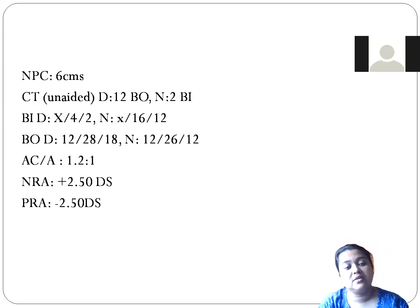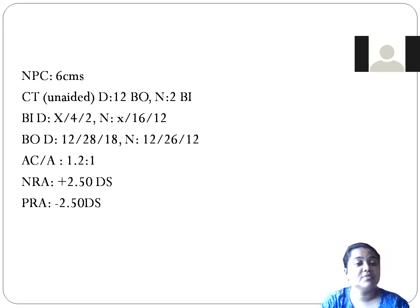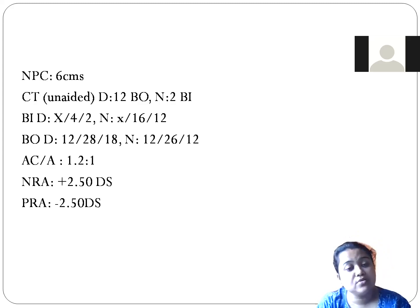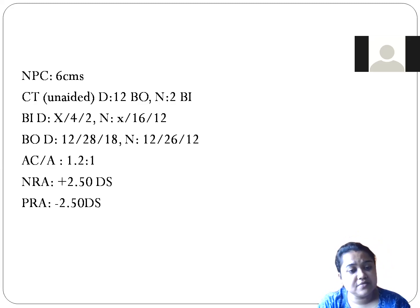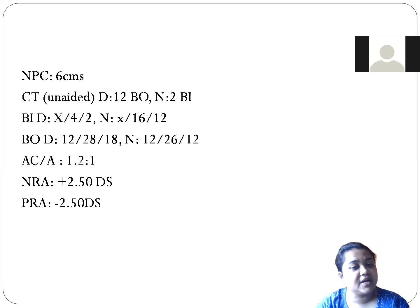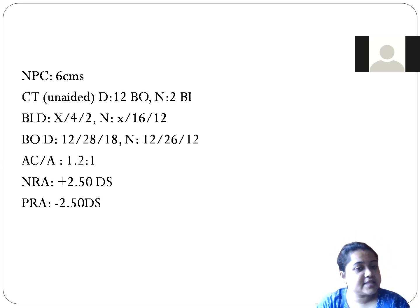The AC/A ratio is 1.2:1, which is very low — indicating a normal AC/A ratio. The NRA is plus 2.5 and the PRA is minus 2.5, which are absolutely normal values.